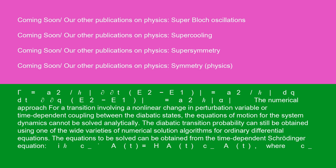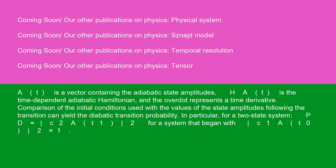For a transition involving a nonlinear change in perturbation variable or time-dependent coupling between the diabatic states, the equations of motion for the system dynamics cannot be solved analytically. The diabatic transition probability can still be obtained using one of the wide varieties of numerical solution algorithms for ordinary differential equations. The equations to be solved can be obtained from the time-dependent Schrödinger equation: i * C_A(t) = H_A(t) * C_A(t), where C_A(t) is a vector containing the adiabatic state amplitudes, H_A(t) is the time-dependent adiabatic Hamiltonian, and the dot represents a time derivative. Comparison of the initial conditions with the values of the state amplitudes following the transition yields the diabatic transition probability; for a two-state system, P_D = |C2_A(t1)|² for a system that began with |C1_A(t0)|² = 1.